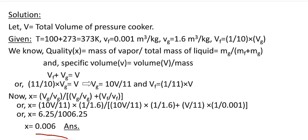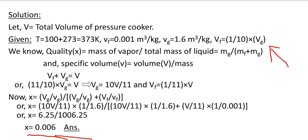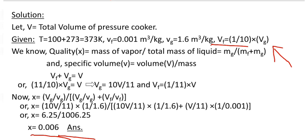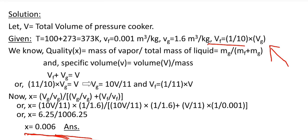Here we can cross-verify our answer using this relation. The quality or dryness fraction of steam represents the amount of vapor present in the mixture. According to the question, the volume of saturated liquid is one tenth of the volume of saturated vapor, meaning the amount of saturated liquid in the vapor is very less. Due to this, the quality or dryness fraction of the mixture will be very less, and our answer is 0.06. So here we have verified our answer.